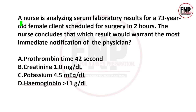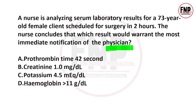Next question: A nurse is analyzing serum laboratory results for a 73-year-old female client scheduled for surgery in 2 hours. The nurse concludes that which result would warrant the most immediate notification of the physician? Options: Option A — prothrombin time 42 seconds, Option B — creatinine level 1.0 mg/dL, Option C — potassium level 4.5 mEq/L, Option D — hemoglobin level more than 11 g/dL.